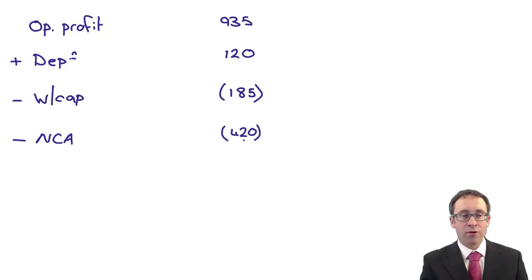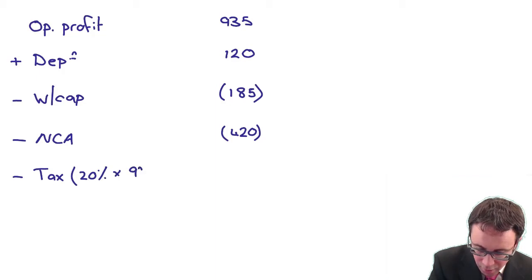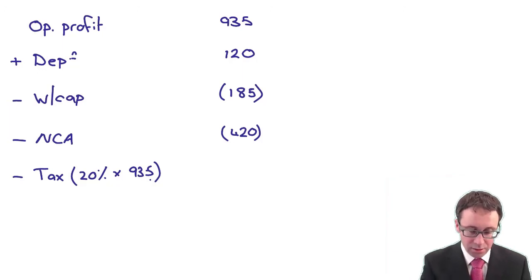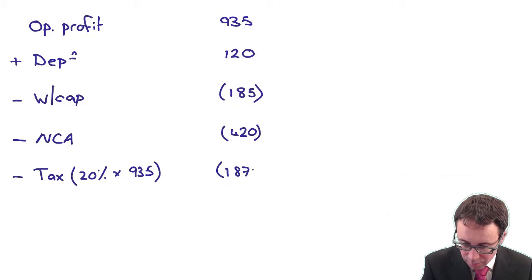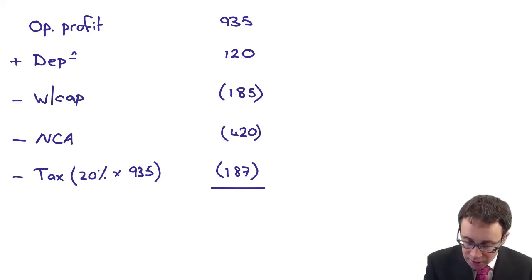And then what we need to do to work out our free cash flows is deduct any tax payments. Tax rate is there at 20%. The operating profit figure is there at 935. So 935 plus 120 less 185 less 420 less 187, is there's 263.